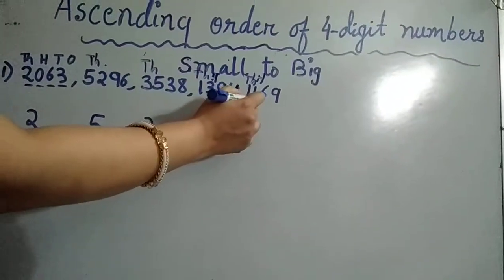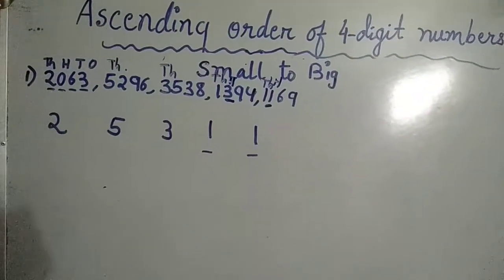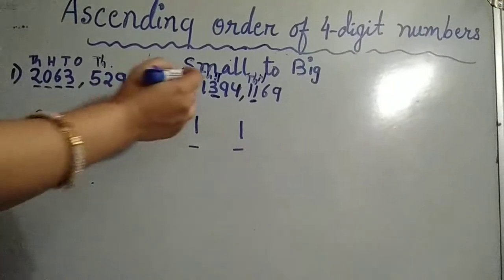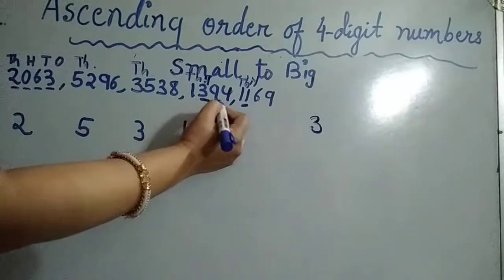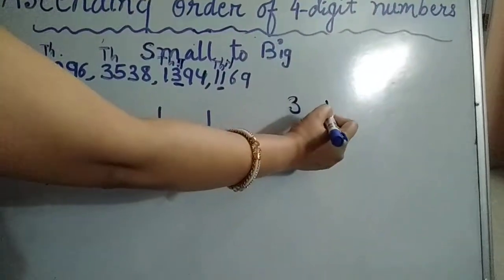The next digit we have to consider for comparing. So here in the hundreds place we have three, and in the other number in the hundreds place we have one.